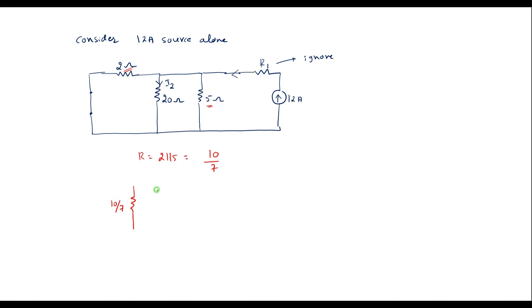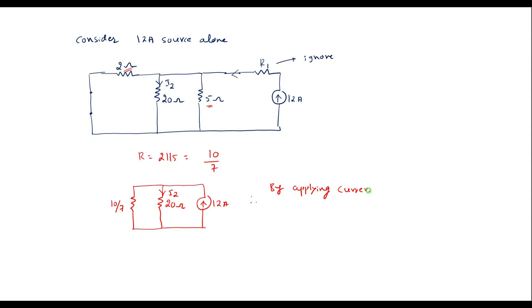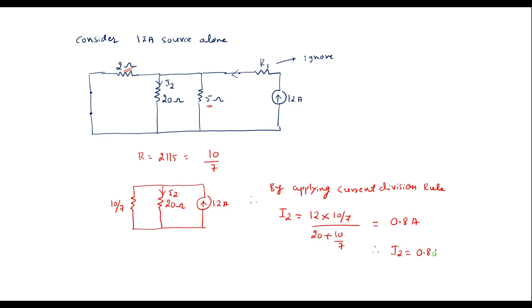Redrawing the circuit: we have the 10/7 ohm resistor in parallel with the 20 ohm resistor, and a 12 amp current source. Let the current through 20 ohm be I2. Applying the current division rule: I2 = 12 × (10/7) / (20 + 10/7). Solving this gives I2 = 0.8 amps.